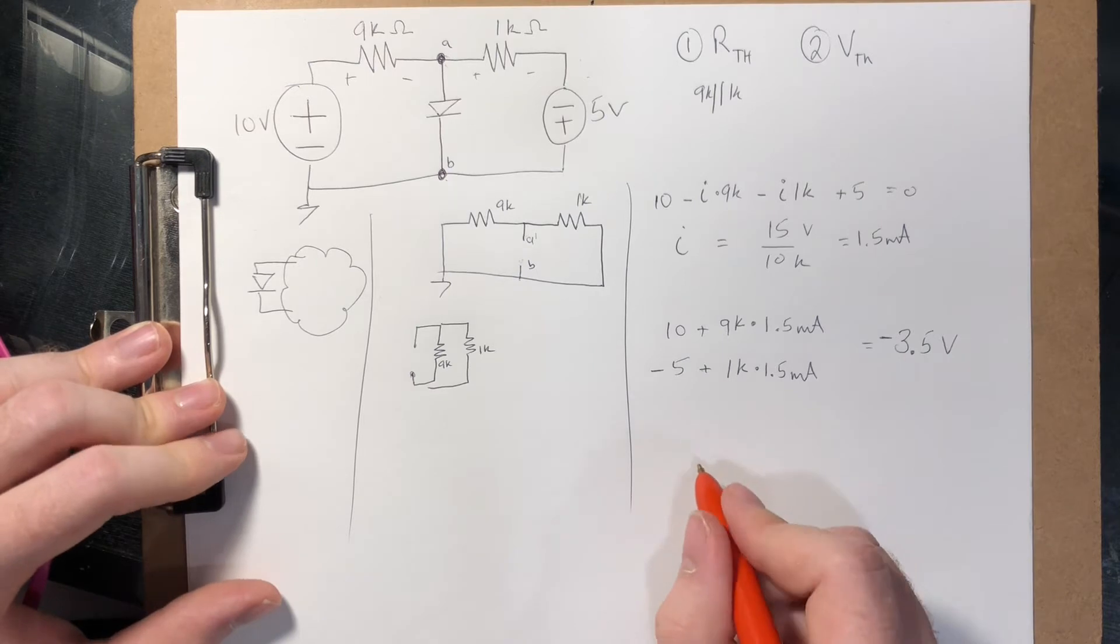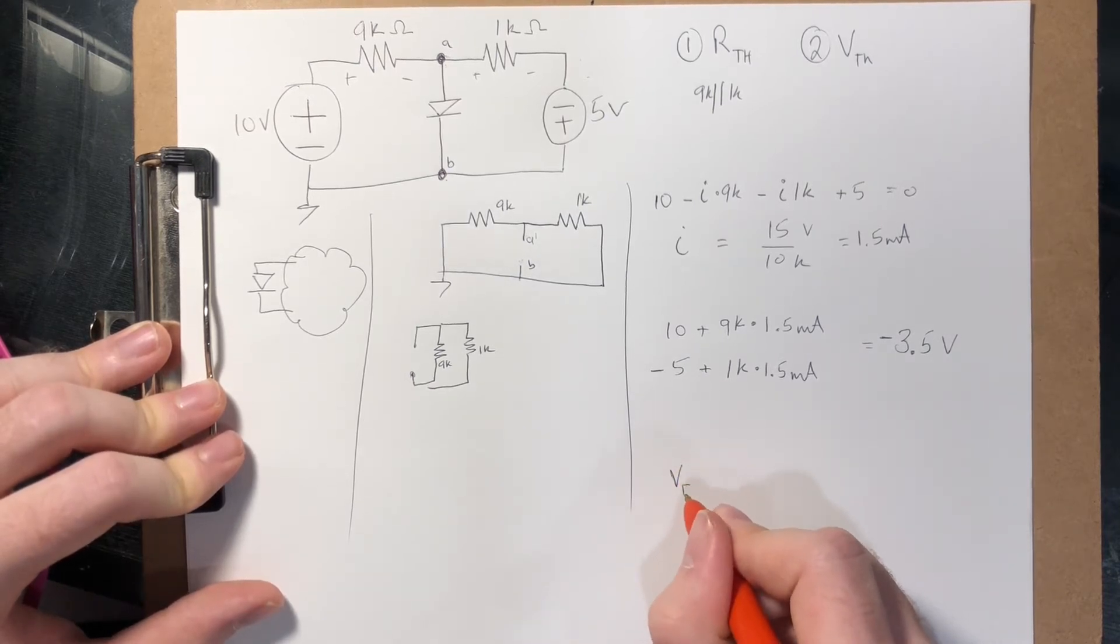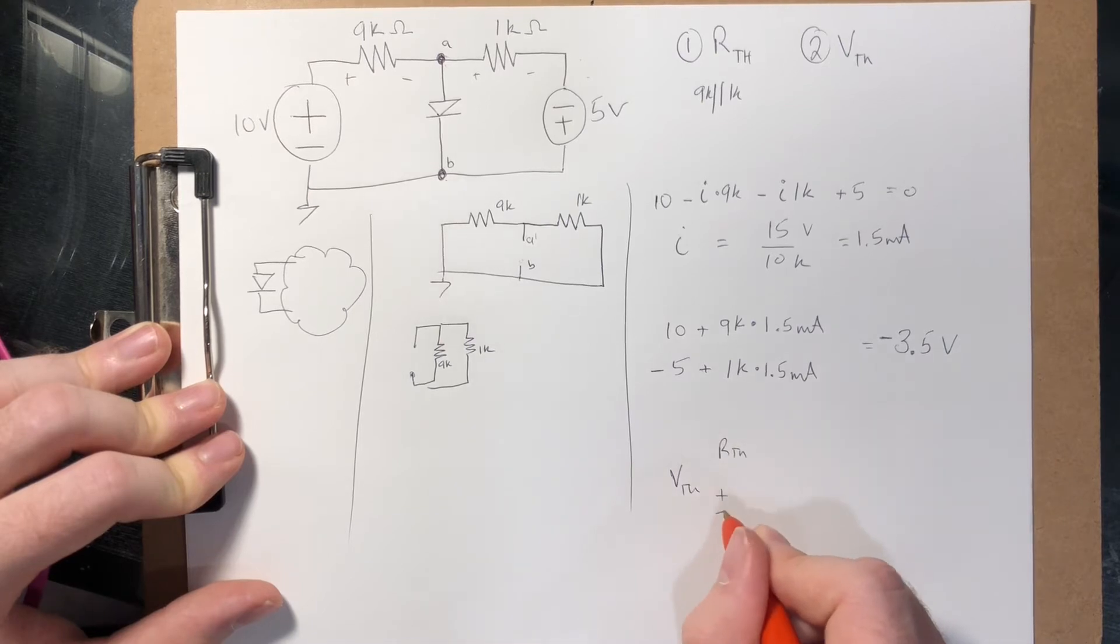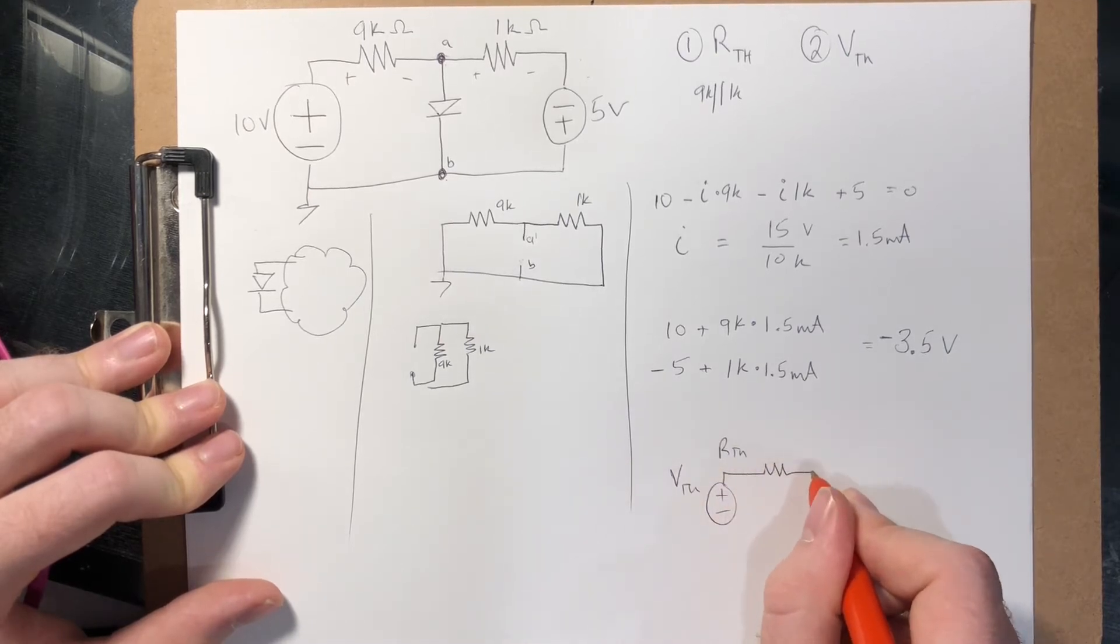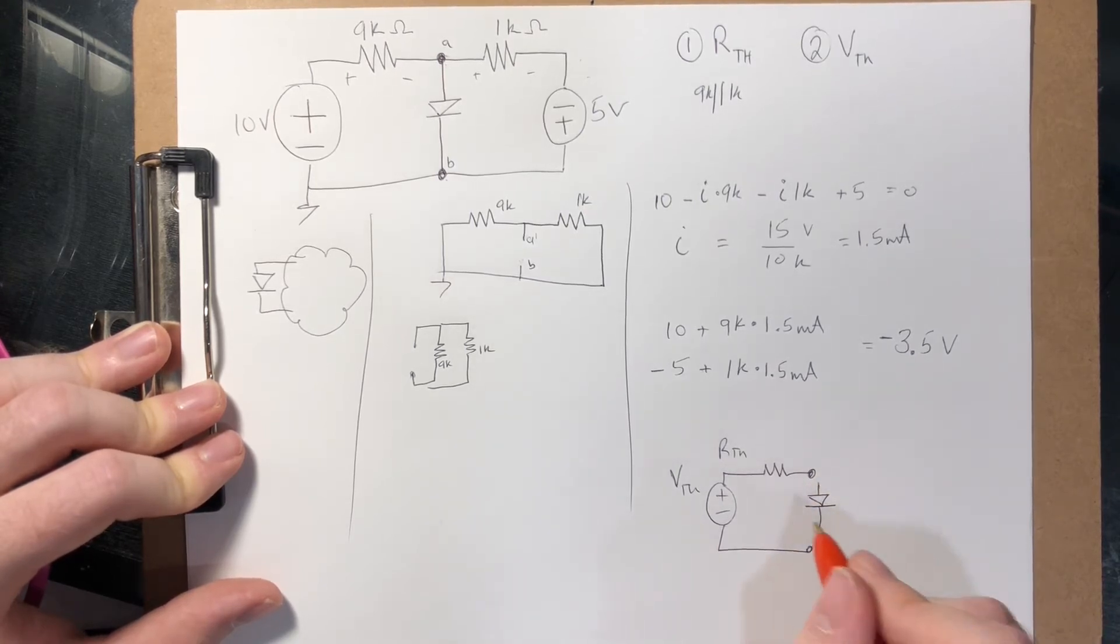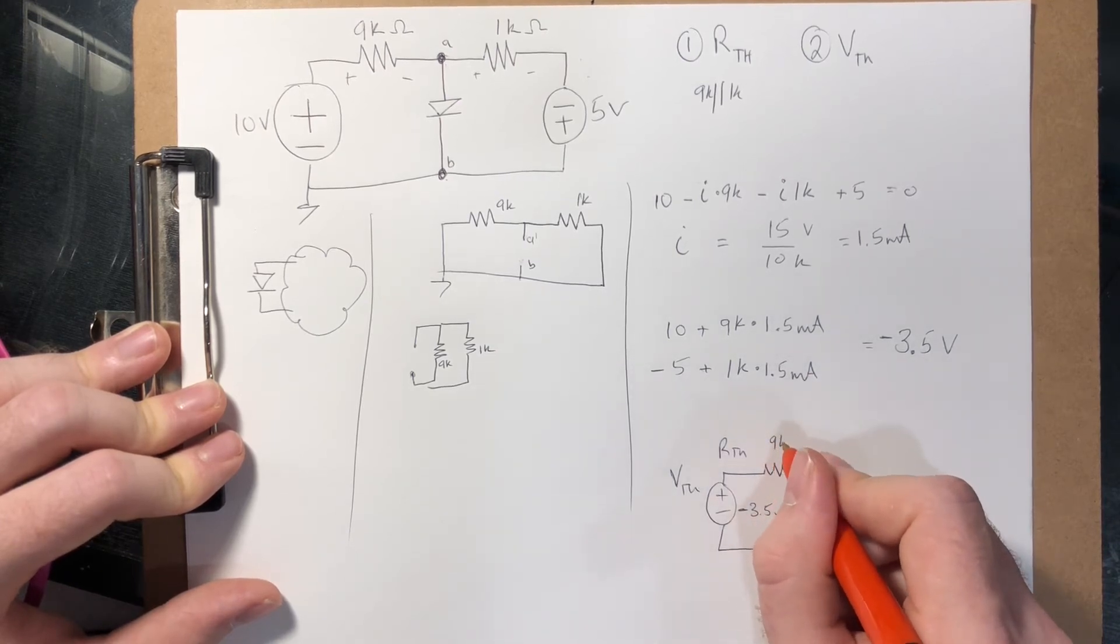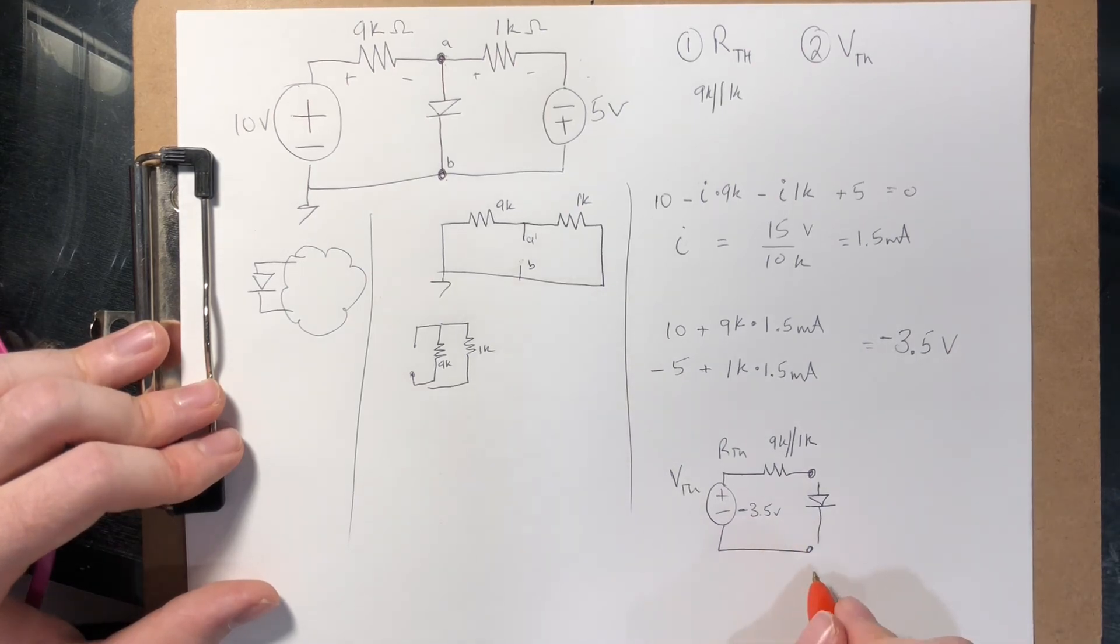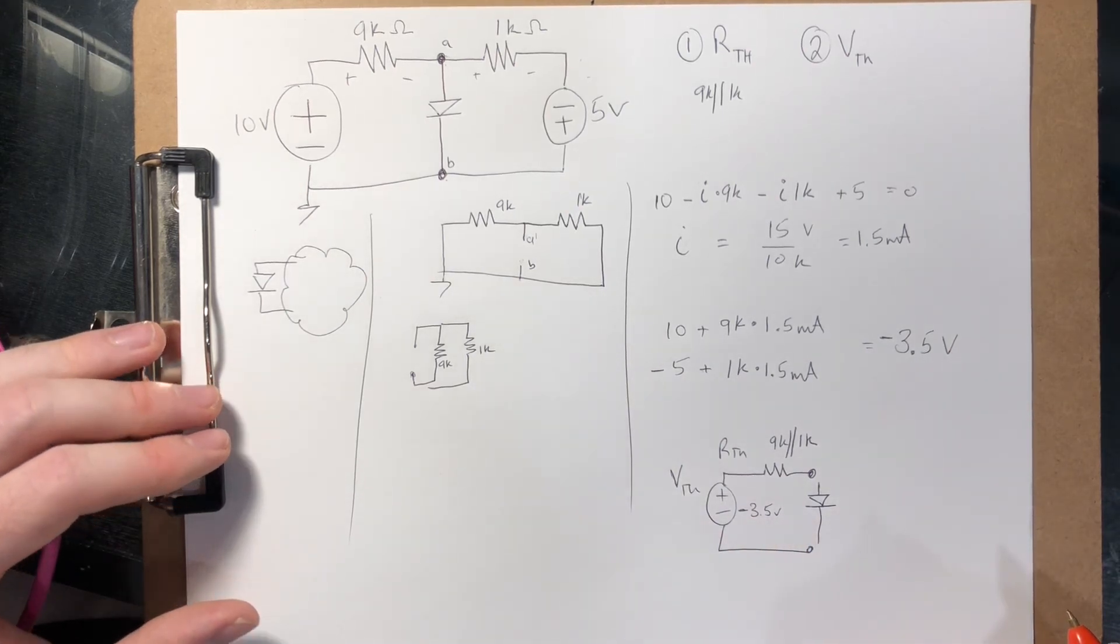So now our equivalent circuit with V Thevenin and R Thevenin that the diode sees is minus 3.5 volts and 9k in parallel with 1k. So we can see that obviously the diode is not on.